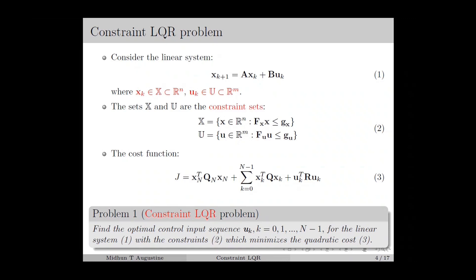The sets X and U are constraint sets for the states and controlled vectors, which can be defined using linear inequalities as in equation number 2, where fx, gx, fu, and gu are matrices of appropriate dimensions. The cost function is defined as a quadratic function as in equation number 3, similar to the case of discrete LQR. The constrained LQR problem is to compute the controlled input sequence over the time horizon N, which minimizes the quadratic cost for the linear system as in equation number 1, with the constraints as in equation number 2.